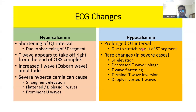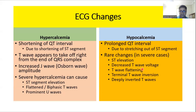In cases of hypocalcemia, the QT interval will be prolonged due to stretching out of the ST segment. In severe cases, there can be rare changes such as ST elevation, decreased T-wave voltage, T-wave flattening, terminal T-wave inversion, and deeply inverted T-waves.